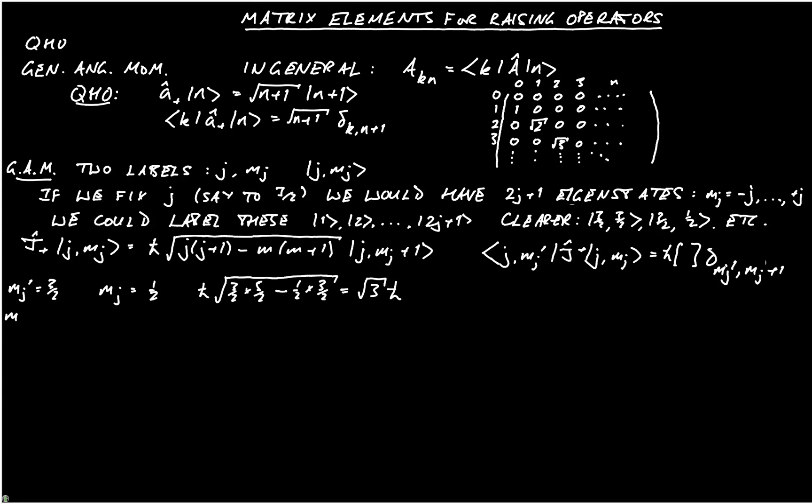If we take mj prime is equal to a half, then mj has to equal minus a half for the delta function to be 1, and we get the matrix element of h-bar into the square root of 3 over 2 times 5 over 2, this never changes, remember, minus, then we have m, which is minus a half, times m plus 1, which is a half. So there we have 15 over 4, add a quarter, which is 16 over 4, or 4, so when we take the square root, we get 2 h-bar.